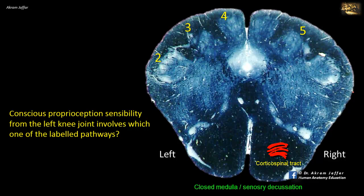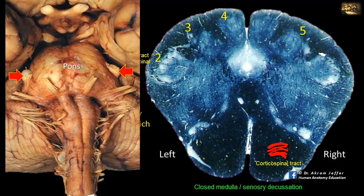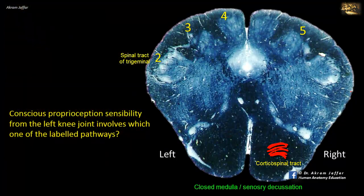Two is the spinal tract of the trigeminal nerve. This tract consists of sensory fibers derived mainly from the trigeminal nerve, but also includes fibers from facial, glossopharyngeal, and vagus nerves — all the nerves that contribute to the sensory innervation of the head. This tract descends from where the trigeminal nerve is attached, down to the level of the upper cervical spinal cord. The tract and nucleus mediate pain and temperature sensations from the head, and it is not involved with proprioception from the knee.